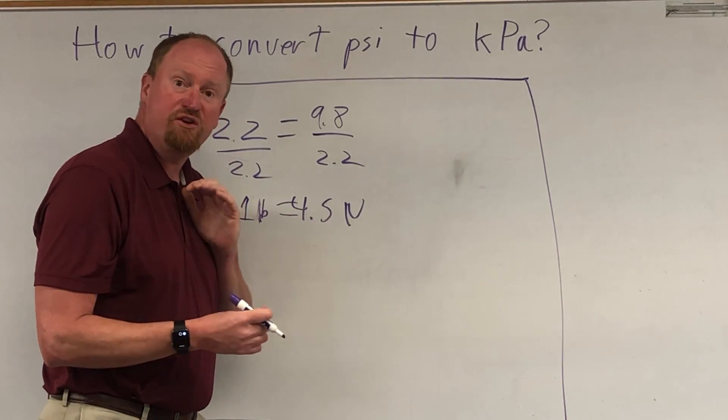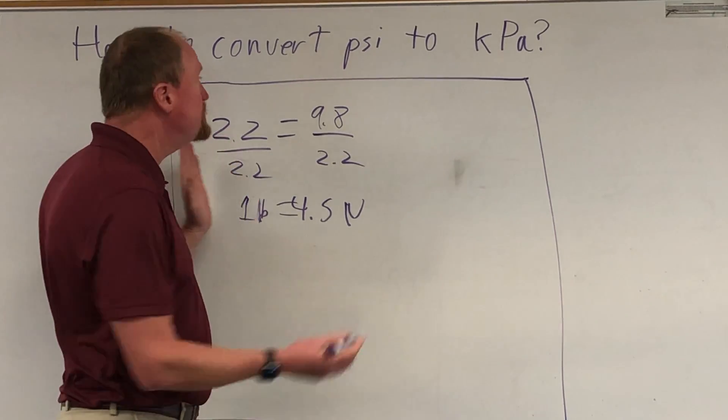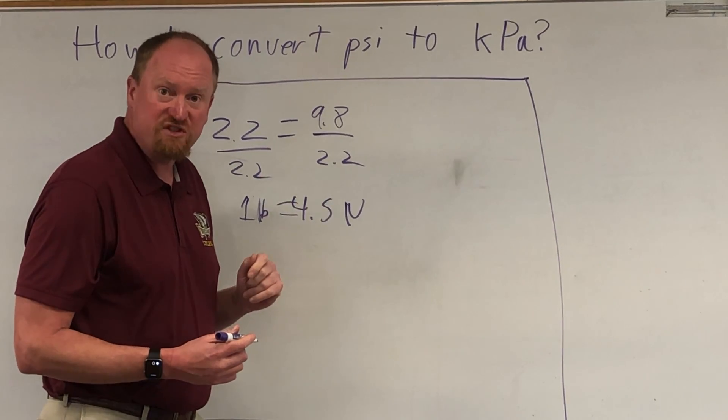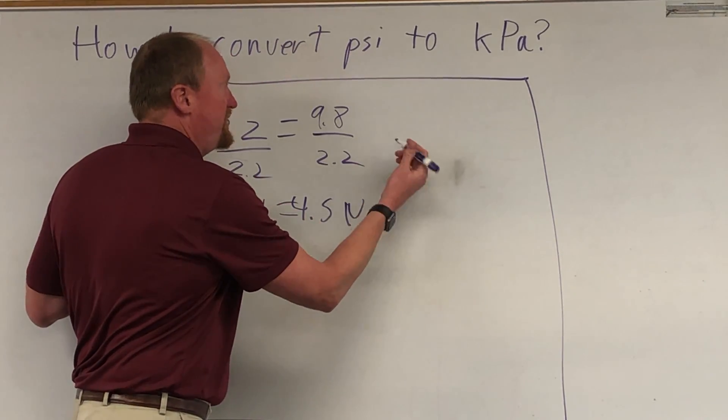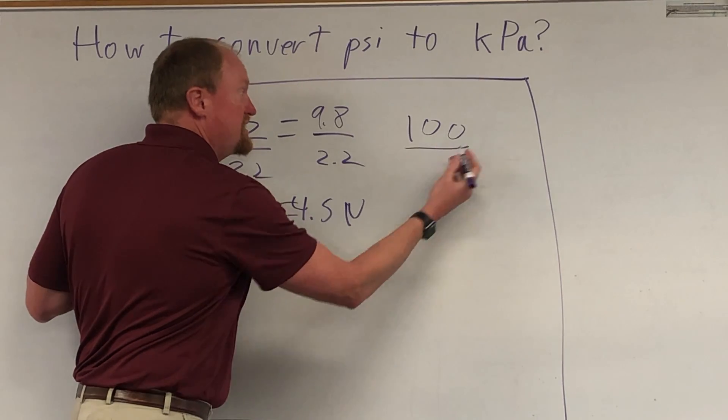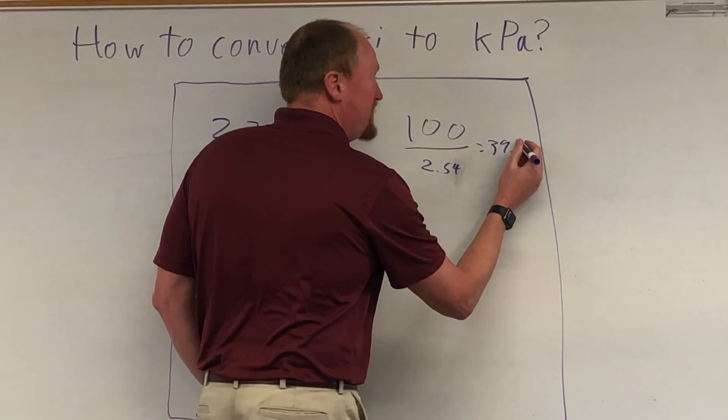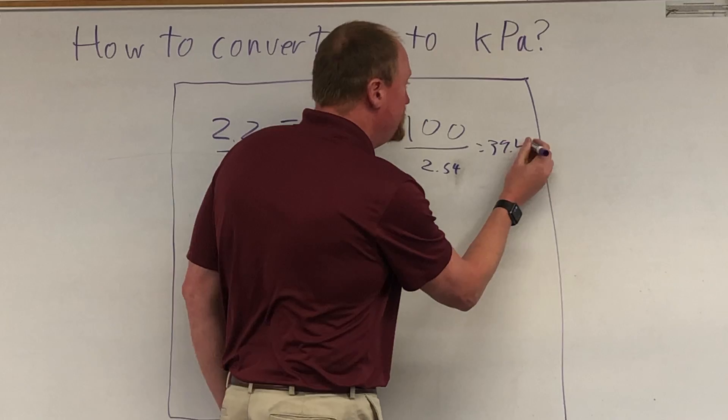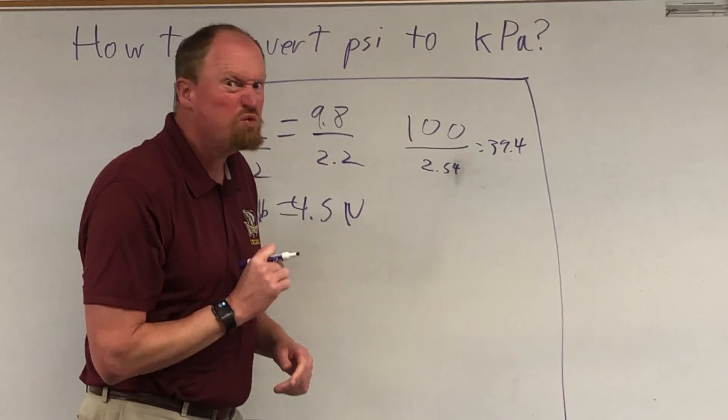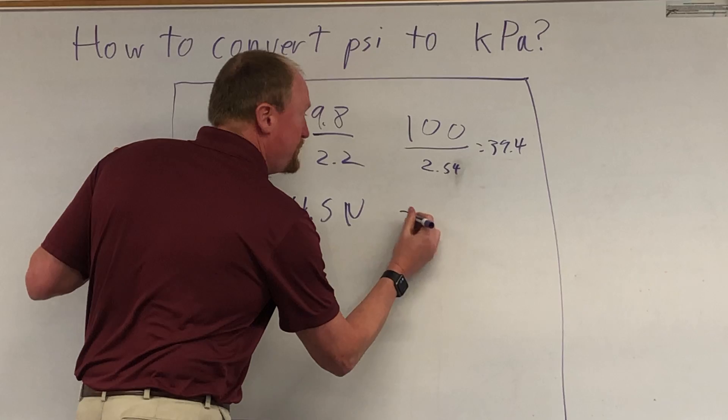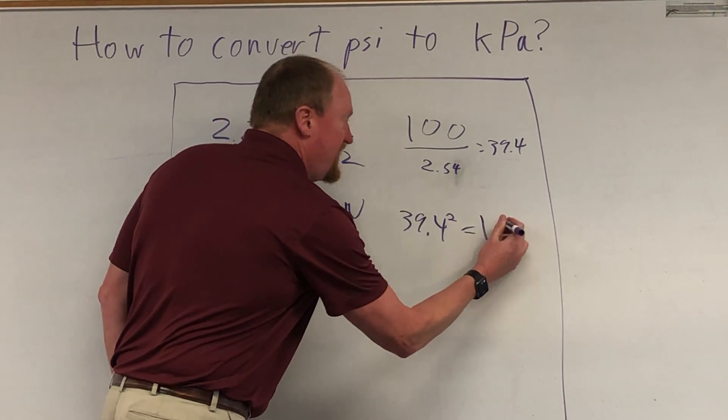So we've now converted the forces here. Now let's convert the areas. So a square meter is 100 centimeters on each side, and there are 2.54 centimeters in an inch. So let's do our areas here. So 100 centimeters divided by 2.54 is equal to roughly 39.4. So each side is 39.4 inches. A meter is a little bit more than a yard. Now since this is a square meter, not a linear meter, we're going to have to take that 39.4 and square it, which is going to give us roughly 1,550.